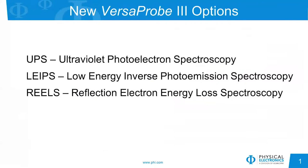Hello, my name is John Newman from Physical Electronics, and I am going to talk today about three different options available on the Versaprobe 3 XPS instrument. The first option is ultraviolet photoelectron spectroscopy, or UPS. The second is low-energy inverse photoemission spectroscopy, or LIPS. And the third is reflection electron energy loss spectroscopy, or REELS.